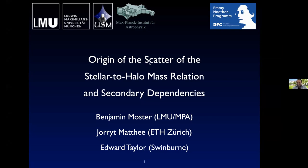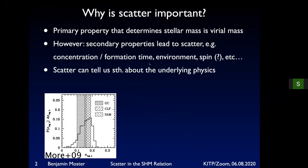He calls it empirical, but I would more call it observational. He'll give a look at lensing results and then wrap it all up and conclude. So let me start by asking where scatter is actually important, because we know the primary property that drives stellar mass is the baryonic mass in the halo.